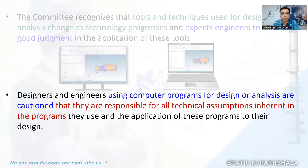The code cautions us: designers and engineers using computer programs for design or analysis are responsible for the technical assumptions inherent in the program. For example, if any software rounds values to two decimal places but the code requires three decimal precision, it is your responsibility to adjust the software settings accordingly. The software company or the software itself is not held responsible — the person who uses the software is held responsible.